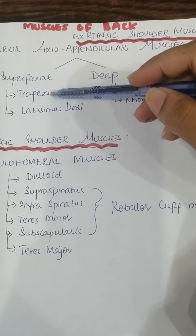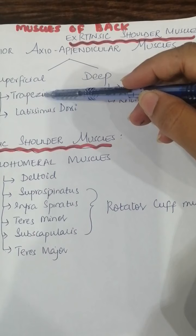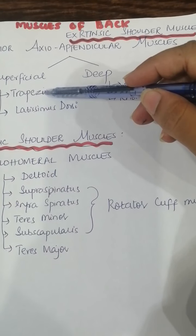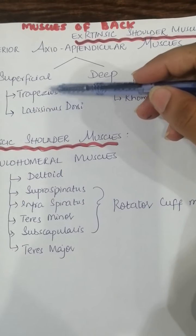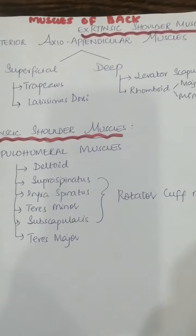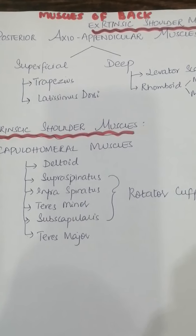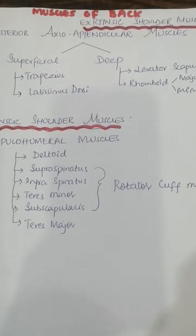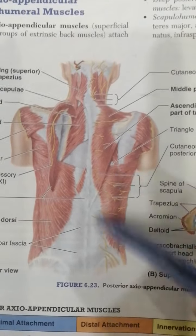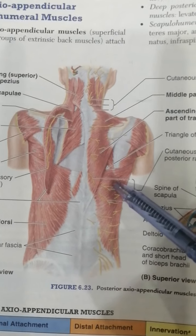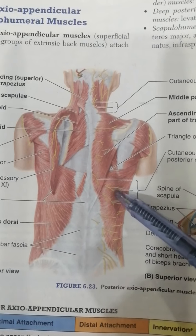We will always study the muscles with their origin, insertion, nerve supply and action. The first and main muscle that lies superficially is the trapezius muscle. Trapezius provides a direct attachment of the pectoral girdle to the trunk. Here you can see these are the muscles of the back — this one is trapezius, this one is latissimus dorsi. These lie superiorly.